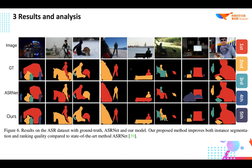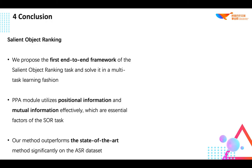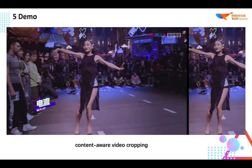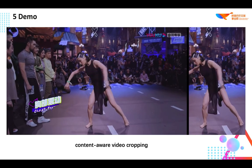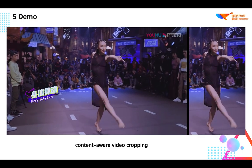In conclusion, we propose the first end-to-end framework for the salient object ranking task, solving it in a multi-task learning fashion. The framework performs instance segmentation and salient object ranking simultaneously. We also propose a position-preserved attention, PPA, module tailored for the SOR branch, which effectively utilizes positional and mutual information — essential factors of the SOR task. Our method outperforms the state-of-the-art significantly on the ASR dataset. Finally, we show an application of video cropping, where we crop the top-one salient object as the subject and generate the cropped video.